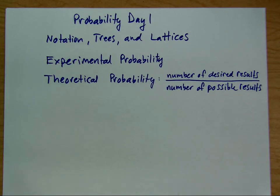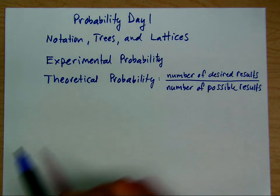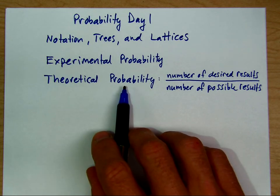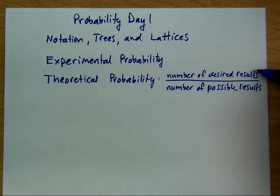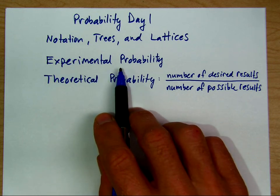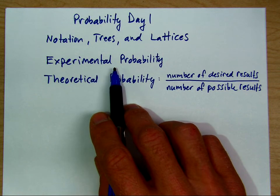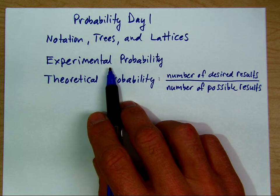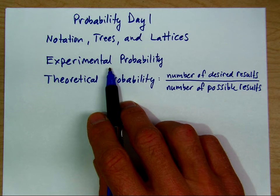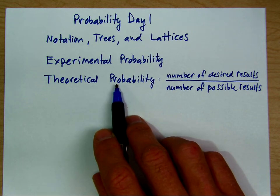In this lesson, we'll look at basic probability and understand some notation, and use trees and lattices to count possible outcomes. We'll be focusing on theoretical probability — that's when we count the number of desired results over the number of possible results. Experimental probability is when you carry out some test, like rolling a die a thousand times and counting how many ones you get. That's related to measuring a sample and predicting what happens in the population. With theoretical probability, we're just going to count the possible outcomes.